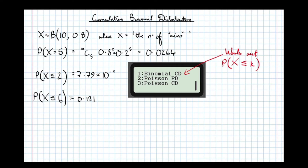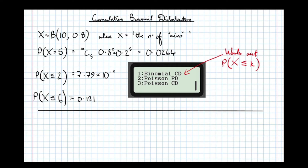Let's make it a bit more difficult now. Let's find the probability that X is greater than or equal to something. So let's do the probability that X is greater than or equal to 5. This is a bit more difficult because on the ordinary Classwiz calculator, the calculator only does the probability that X is less than or equal to something. The cumulative distribution only gives us less than or equal to. If you've got a fancy CG50 graphical calculator, it will do greater than or equal to for you. But the standard Classwiz — the 20 quid job — only does the probability X is less than or equal to.